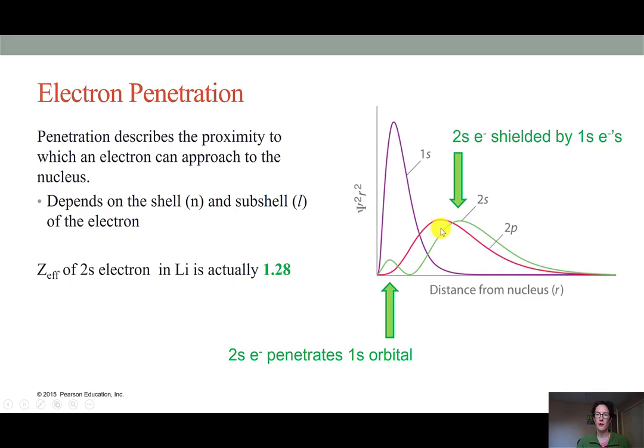So yes, the 2s orbital is a higher energy orbital and tends to be further away from the nucleus of the atom. But during some point in time the electrons in the 2s orbital will actually penetrate into the 1s region feeling more of that effective nuclear charge. And so that's where the idea of electron penetration comes from. It's when these higher energy electrons are actually coming closer in to the nucleus within the space of lower energy orbitals.